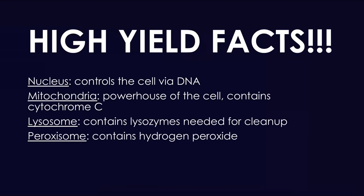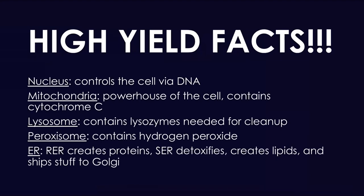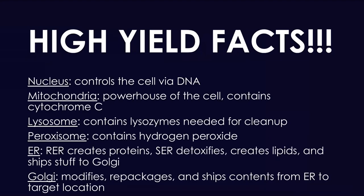Peroxisomes are similar to lysosomes but contain hydrogen peroxide; they also play a huge role in production of phospholipids and beta oxidation of very long chain fatty acids. The endoplasmic reticulum is broken up into the rough ER, which creates proteins, and the smooth ER, which detoxifies, creates lipids, and shifts the proteins the rough ER makes to the Golgi apparatus. The difference between the two is that the rough ER has ribosomes on its surface.